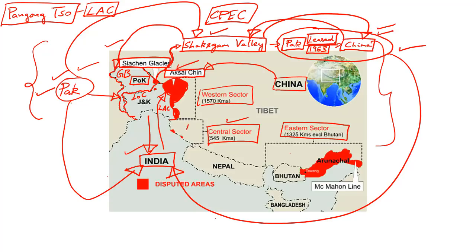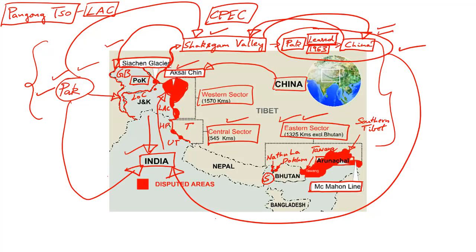The Shaqskam Valley was part of Pakistan-occupied Gilgit-Baltistan, but in 1963, after the Indo-China conflict of 1962, Pakistan illegally leased the Shaqskam Valley to China. So an area claimed by India under Pakistan's illegal occupation was leased to China through a bilateral agreement. Since then, China has maintained a strong presence in the Shaqskam Valley, and both Pakistan and China have jointly executed projects including the proposed China-Pakistan Economic Corridor, posing legal and diplomatic challenges for India.